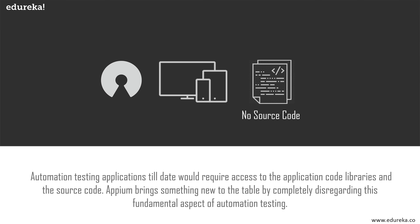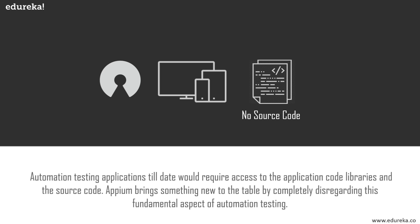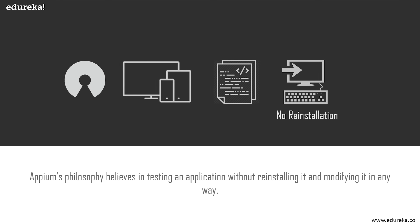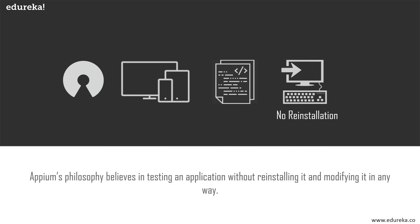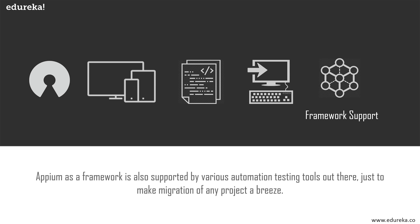A third point is that there is no need for application source code. Automation testing applications to date require access to application code libraries and source code, but Appium brings something new to the table by completely disregarding this fundamental aspect. Our fourth point is that applications do not need to be reinstalled on a device. According to Appium's philosophy, it believes in testing an application without reinstalling or modifying it in any way.